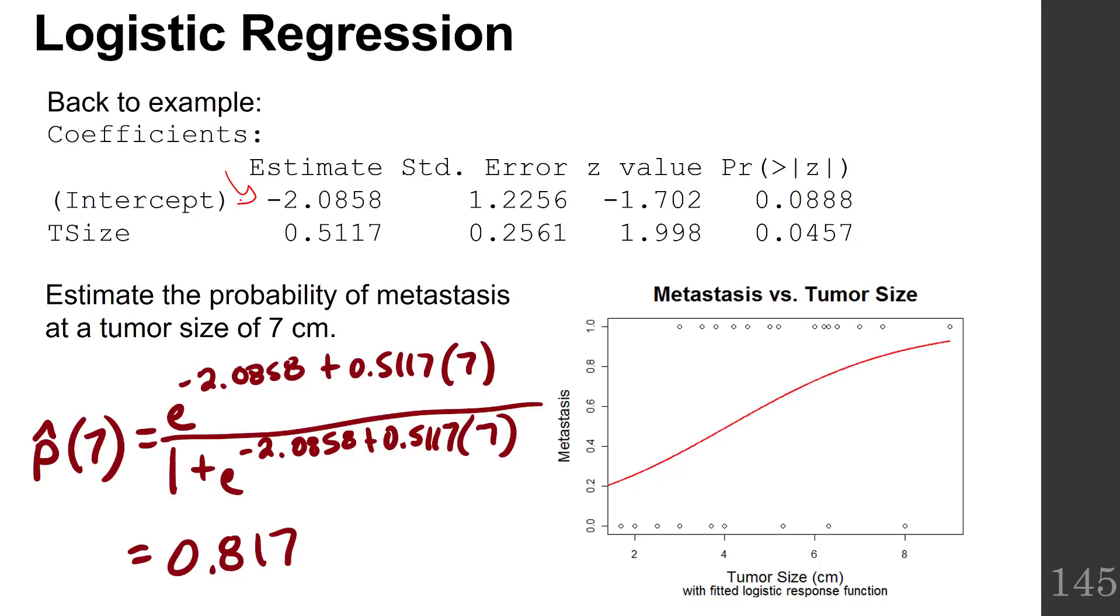And then the x that we want to estimate it at, the tumor size that we want to estimate it at, is a 7. And when you plug that into one of the versions of our formula, you get 0.817.